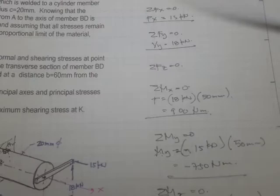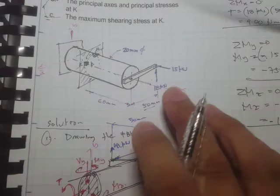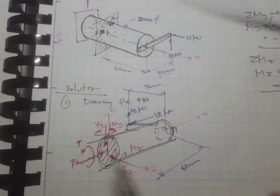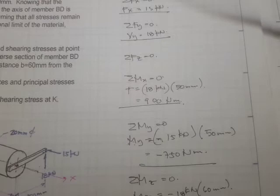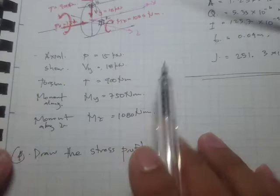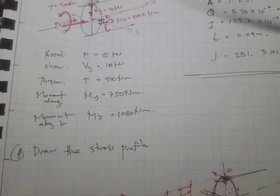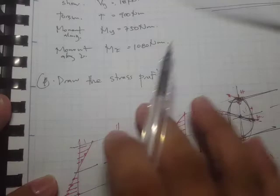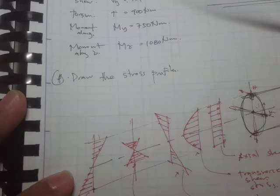Just to have a review of what we did: if we have this problem and we are asked to find the principal stresses at K, we are going to cut a section and expose the internal forces. We determine the value of those internal forces because we are going to solve for the stresses. By applying the equilibrium equations, we can solve for the shear, torsion, moment along Y, and moment along Z.